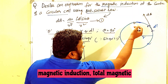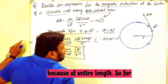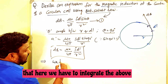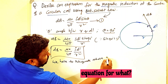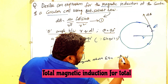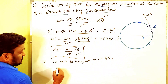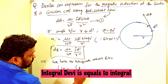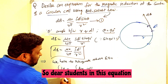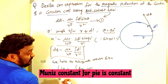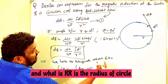Now we want to find the total magnetic induction due to the entire length of the coil. For that, we integrate the above equation: ∫dB = ∫(μ₀/4π) × (I dl / r²). In this equation, μ₀ is constant, 4π is constant, I is constant (constant current passing through the coil), and r is the radius of the coil, also constant.